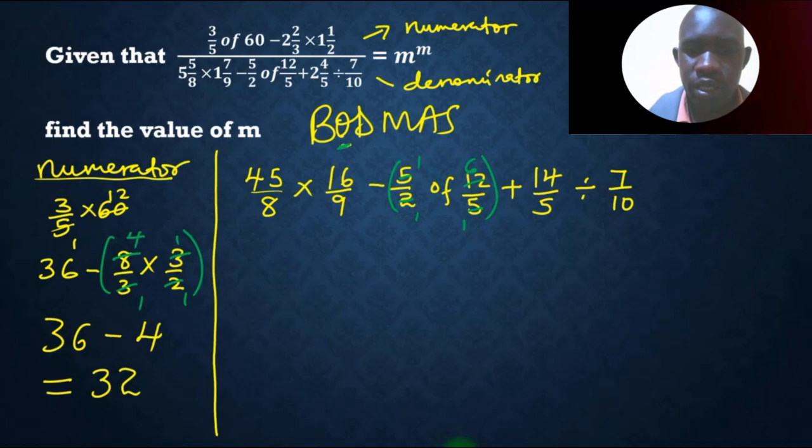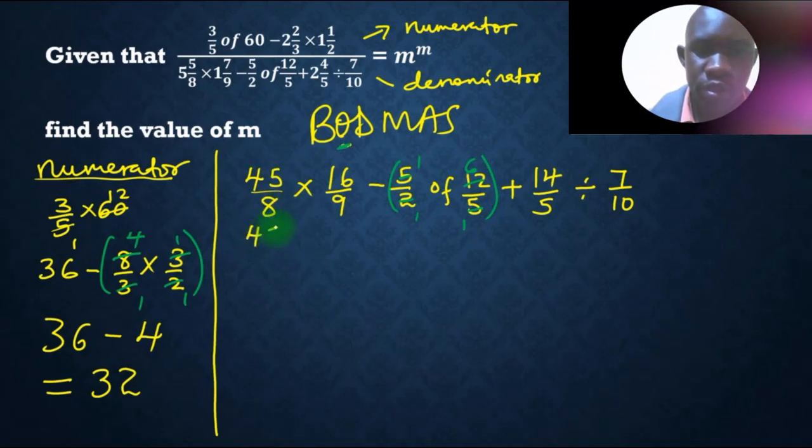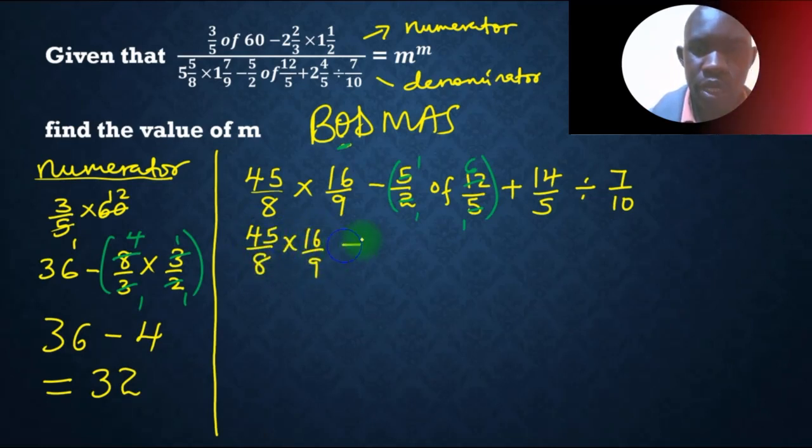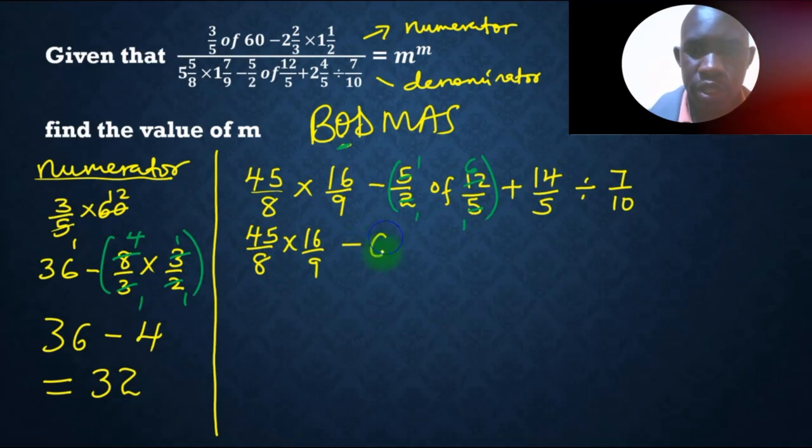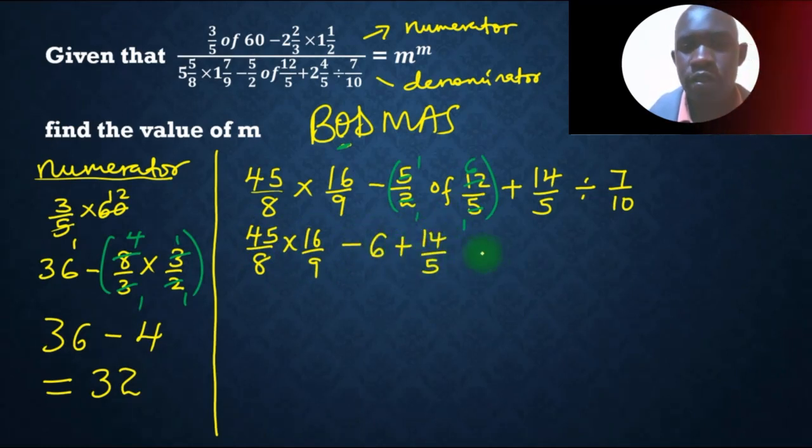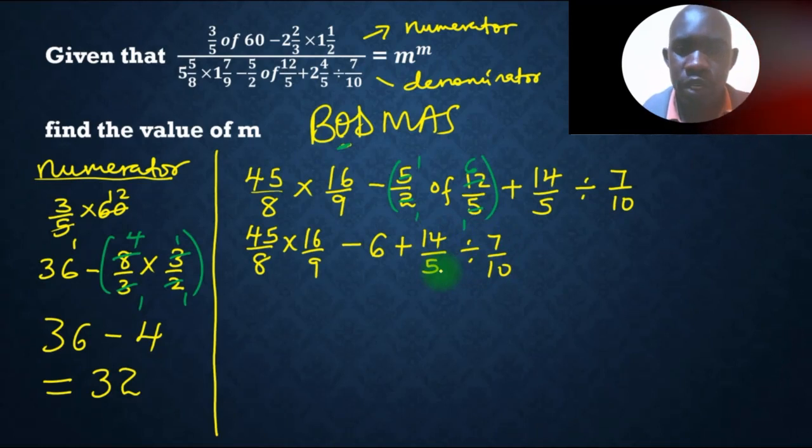So this will be 45 over 8, times 16 over 9, minus, this will be 6, plus 14 over 5, divided by 7 over 10. We have already dealt with of, division. So we have division, so the next part we are going to deal with, division.